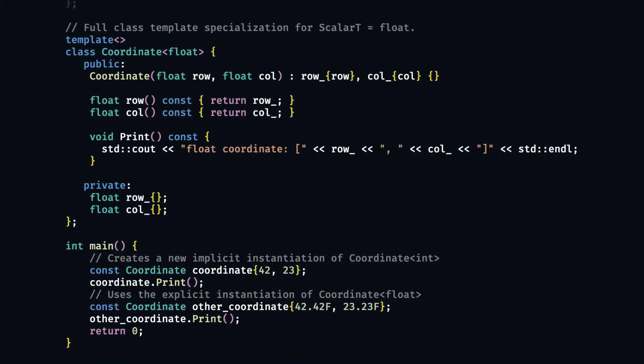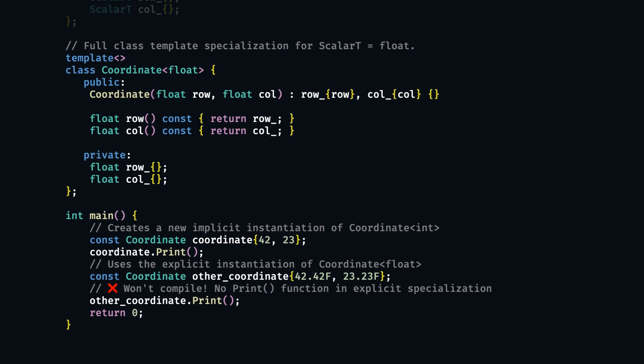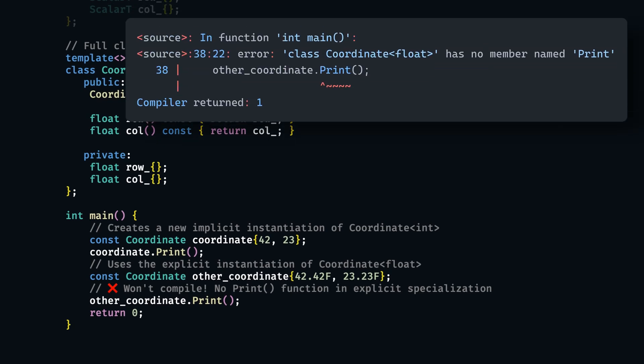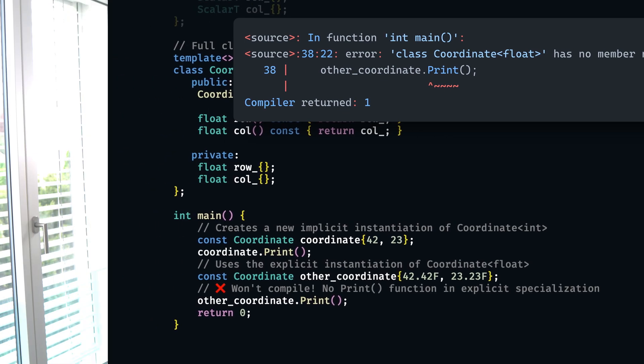Note that as we implemented the other explicit specialization, it is our responsibility to implement the full class along with all the data and methods that it provides. If we implement it differently from the original class template, it will behave differently when we try to use our specialization, which might be confusing or error-prone. Imagine if we, for whatever reason, dropped the print function in our specialization — this example won't compile, as there is no print function found in the class template specialization for float. So if we do decide to specialize a class, we have to make sure it conforms to the same logical interface as the original template.